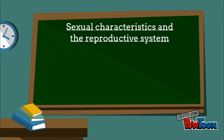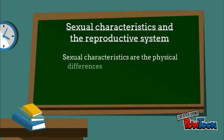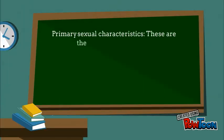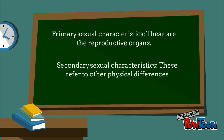Sexual characteristics and the reproductive system. Sexual characteristics are the physical differences that exist between men and women. Primary sexual characteristics are the reproductive organs. And secondary sexual characteristics refer to other physical differences between men and women — for example, a deeper voice in men.